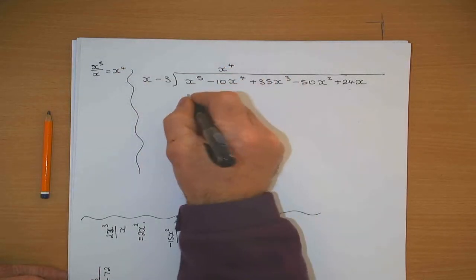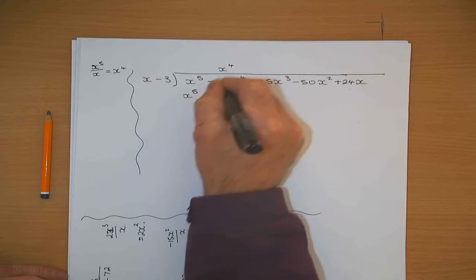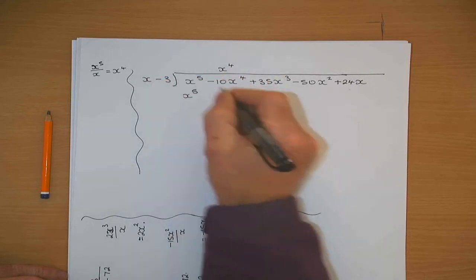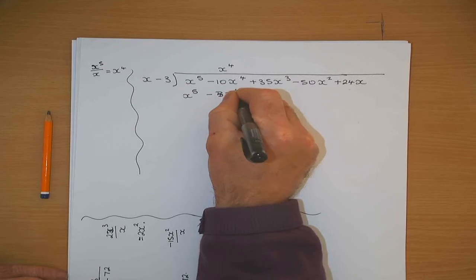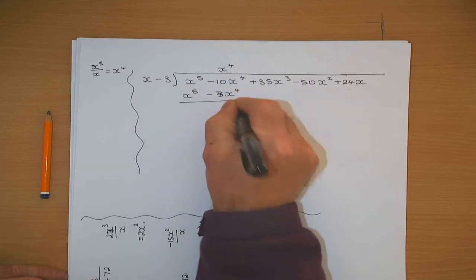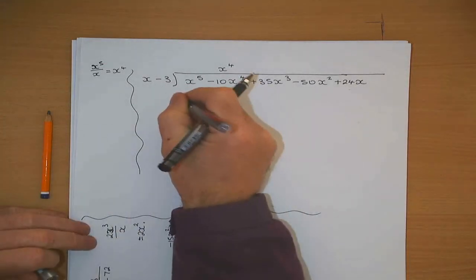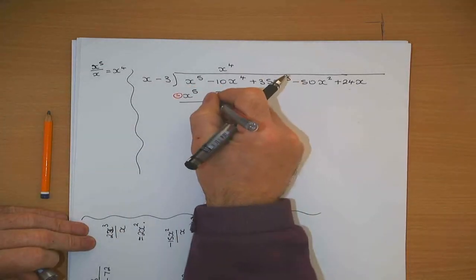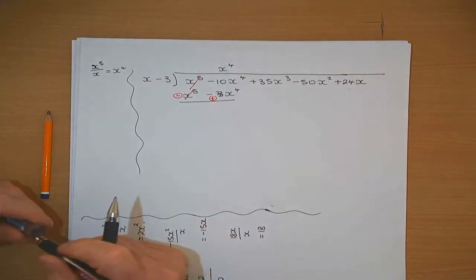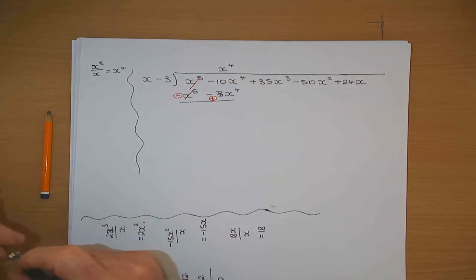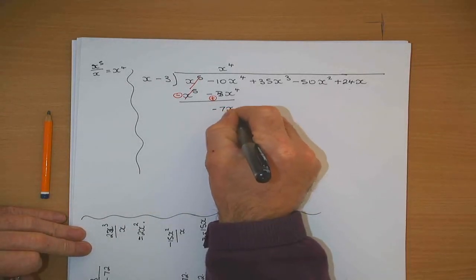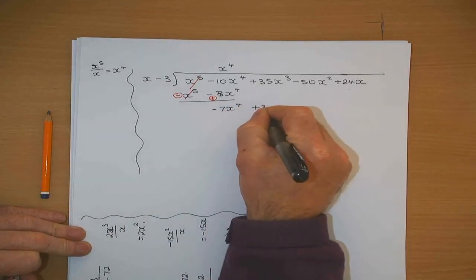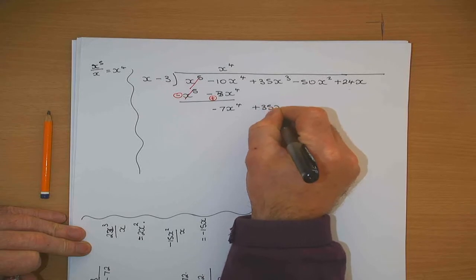x to the power of 4 by x gives x to the 5. x to the power of 4 and minus 3. Minus 3x to the power of... Change the sign — that becomes a minus, that becomes a plus. Cancel. Minus 10x to the 4 plus 3x to the 4. And I bring the 35x cubed down.